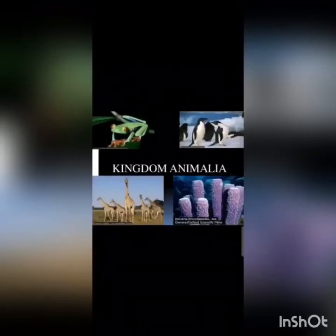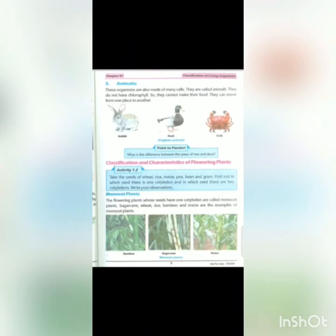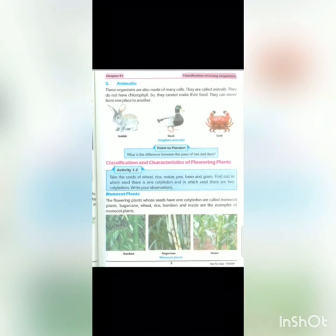And the next is Kingdom Animalia. From page number five of our book: these organisms are also made of many cells — they are called animals. They do not have chlorophyll, so they cannot make their own food. However, they can move from one place to another.